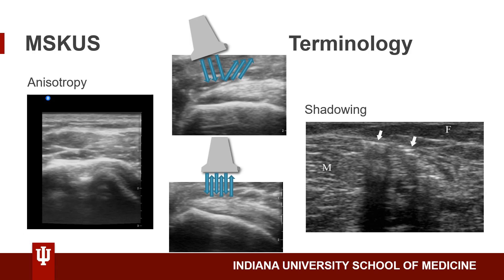A couple of terminology points before we dive into the musculoskeletal ultrasound. First is anisotropy. As we look at the bottom of the PowerPoint slide, we can see what a tendon looks like when you have the ultrasound probe completely perpendicular to the tendon — it's nice, bright, linear, looks like a cable.